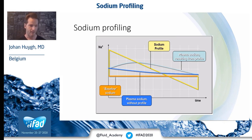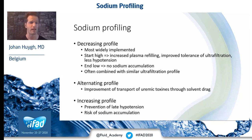To safely implement sodium profiling, the maximum difference in plasma sodium levels can be only 5 mmol per litre, and we must achieve a neutral sodium balance at the end of dialysis — otherwise there would be sodium gain, causing extra problems. There are three main ways of sodium profiling. The first and most widely implemented is a decreasing profile, where we start high but end low, as in the previous example. The low sodium at the end of dialysis prevents sodium accumulation.